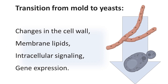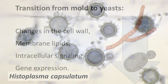Transition from mold to yeast is accompanied by characteristic changes in the cell wall, membrane lipids, intracellular signaling, and gene expression. If fungi are restricted to the mycelial phase due to biochemical or genetic factors, they are unable to cause disease.